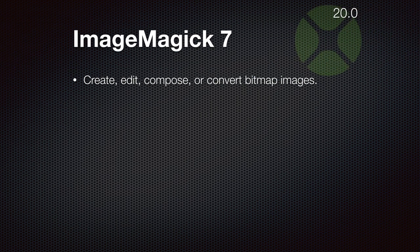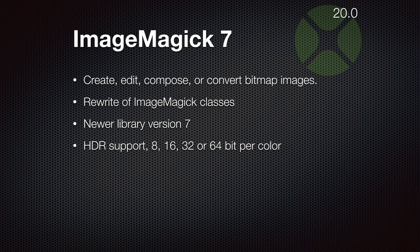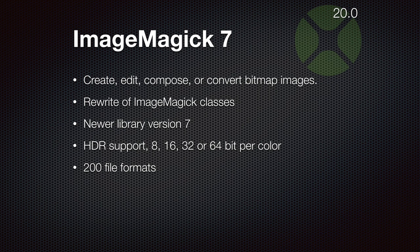ImageMagick 7 can be used to create, edit, compose or convert bitmaps in various formats. We supported ImageMagick 6 for a long time and now we created new classes for version 7. The newer library has different classes so we had to rewrite it, but we gain a lot of new features. With one set of classes we can support all the color depths available including HDR support. As ImageMagick supports over 200 file formats, you can convert pictures of various formats and use all the image effects available in ImageMagick 7.